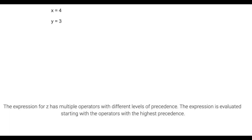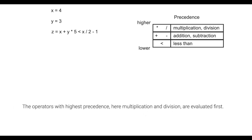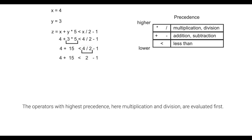The expression for Z has multiple operators with different levels of precedence. The expression is evaluated starting with the operators with the highest precedence. The operators with highest precedence, here multiplication and division, are evaluated first.